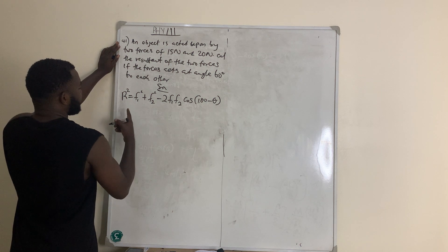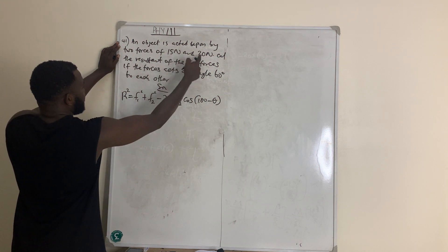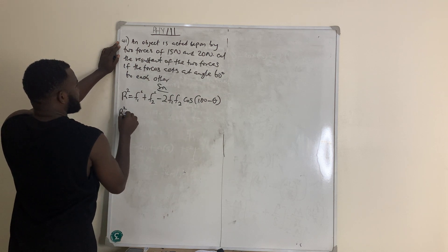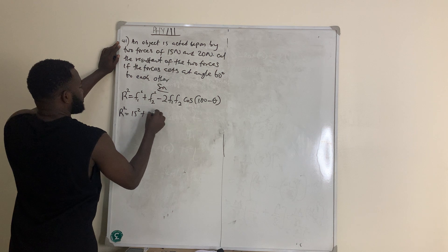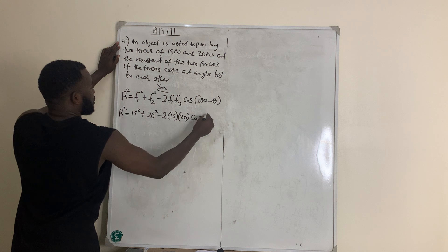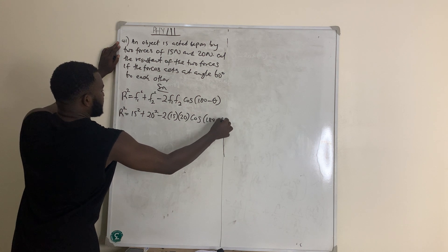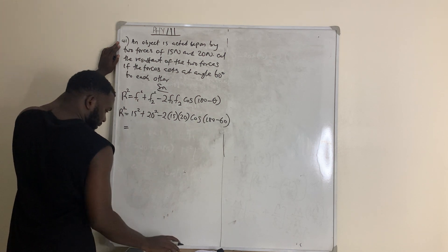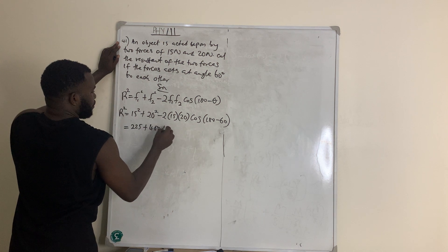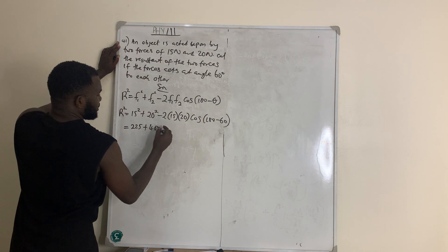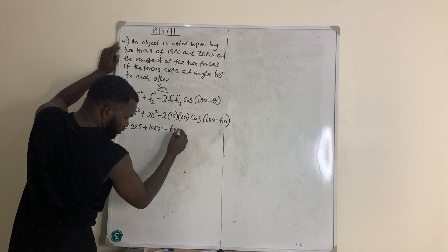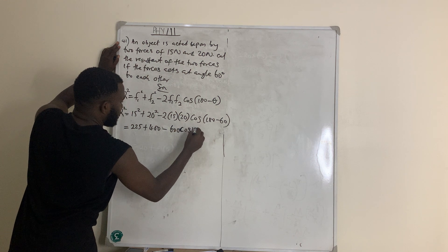Now substituting: F1 is 15, F2 is 20, and the angle θ is 60. So R squared equals 15 squared plus 20 squared minus 2 times 15 times 20 times cos(180 − 60). That gives us 225 plus 400 minus 600·cos(120).